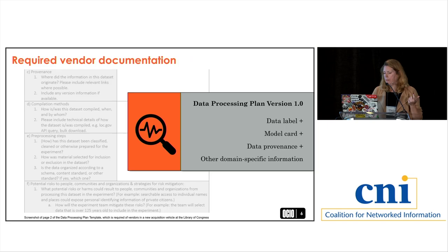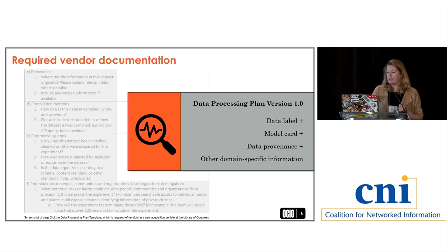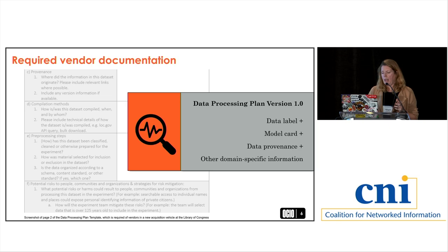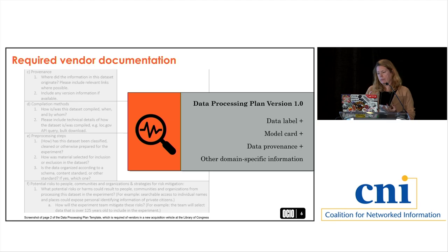We've created what we call a data processing plan and have it required in a new contracting vehicle called the Digital Innovation IDIQ. Any data transformation involving AI or ML requires vendors to fill out a detailed form covering things like data labels, model cards — which are becoming more standard practice in trustworthy AI — data provenance, and other domain-specific information. We capture information about the transformation itself and about the data involved in those transformations, which we as stewards will likely have to collect and maintain.